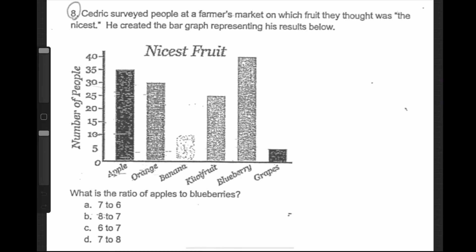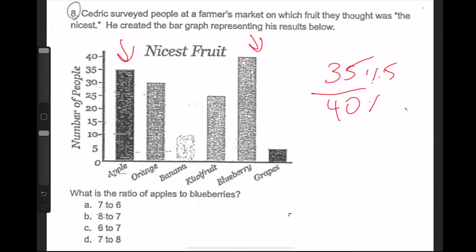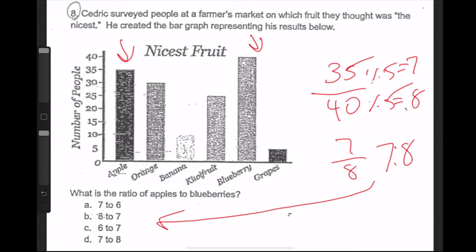Question eight. Cedric surveyed people at a farmer's market on which fruit they thought was the nicest and created a bar graph representing his results. What is the ratio of apples to blueberries? The apples are at 35 and the blueberries are at 40. Both are divisible by five. 35 divided by five is seven, and 40 divided by five is eight. So the answer is seven to eight — letter D.